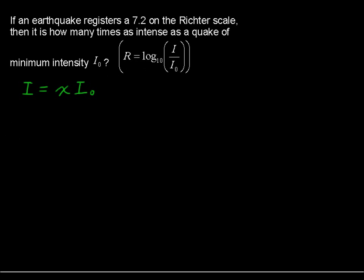So we have 7.2, the Richter scale number, equals log base 10 of x times I₀ over I₀. At this point, we can divide out the I₀ terms or cancel them out.